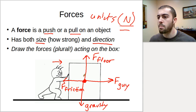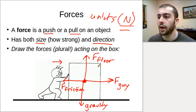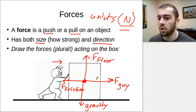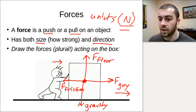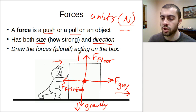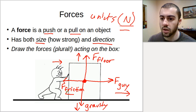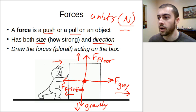So there are four major forces acting on this box as the guy pushes it across the floor. These are any push or pull on an object. The guy is pushing across the floor, gravity is pulling down on the box, the floor is pushing back up on the box, and friction is opposing the motion as the guy pushes to the right.